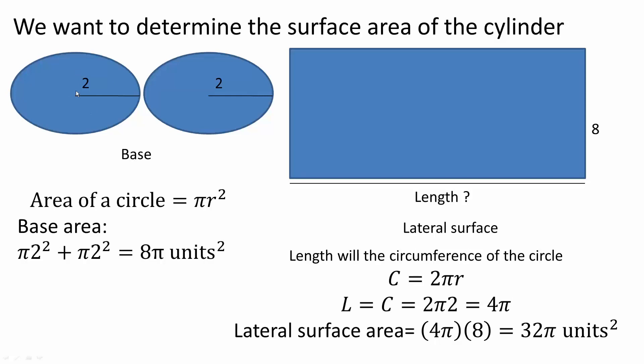So two times πr². The radius is 2, so π times 2 squared. We have two of them. You can multiply this number by 2, or we can simply add the same number, πr². So we get 4π, 4π, we get 8π units squared.